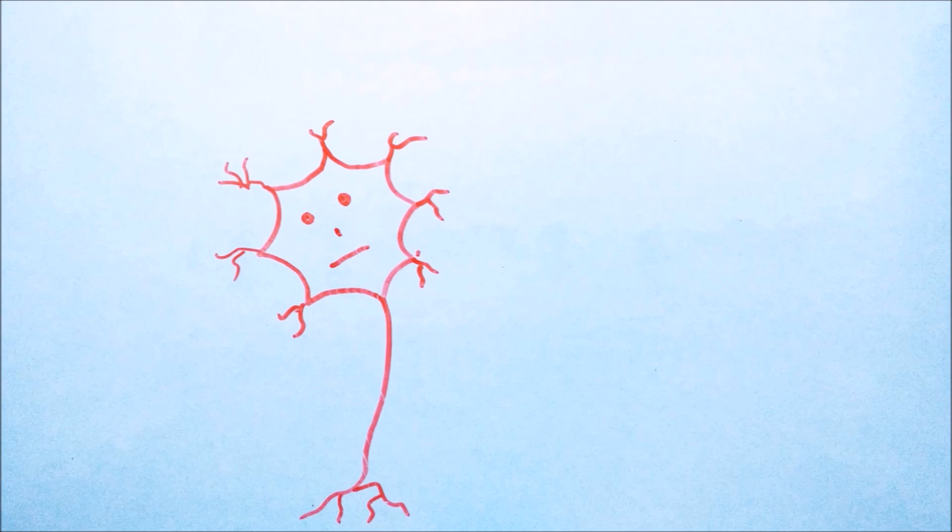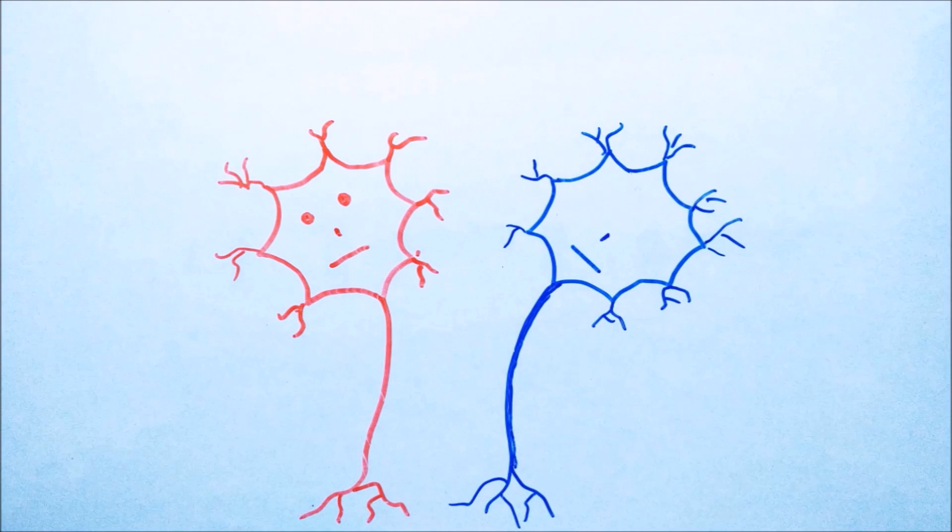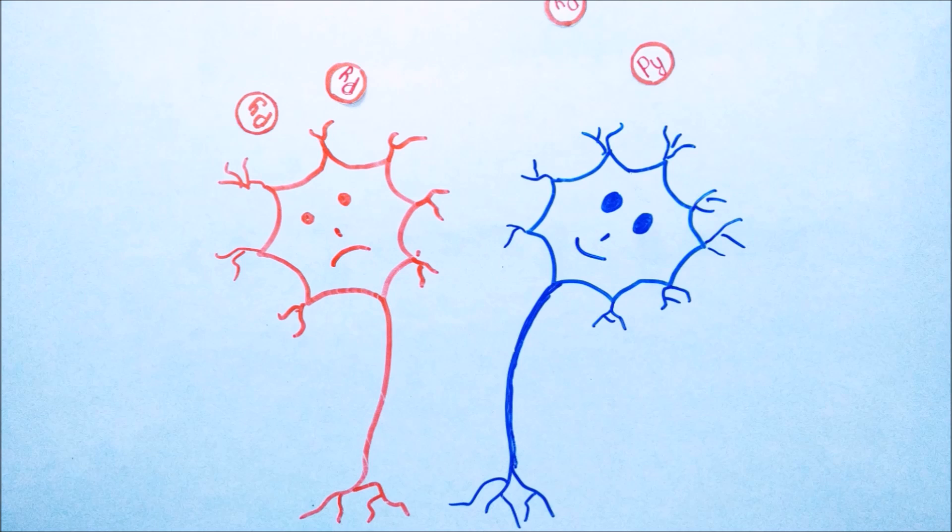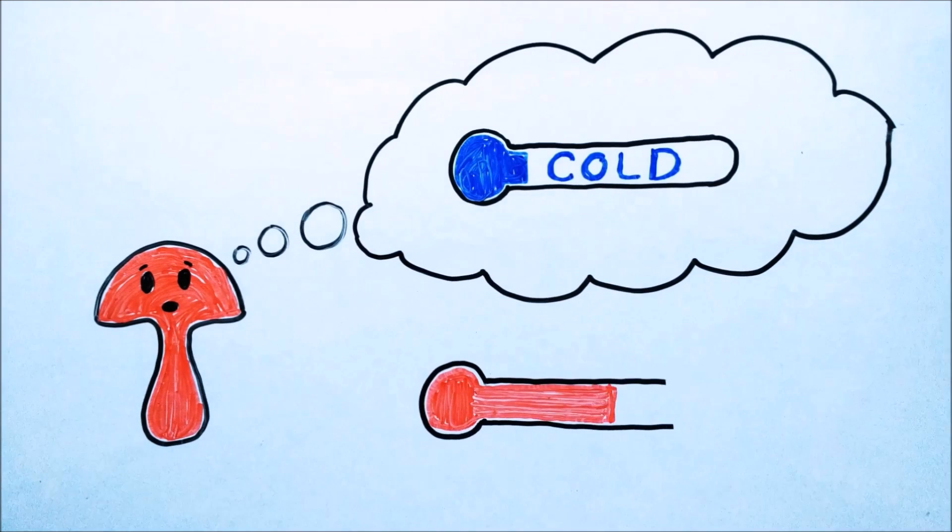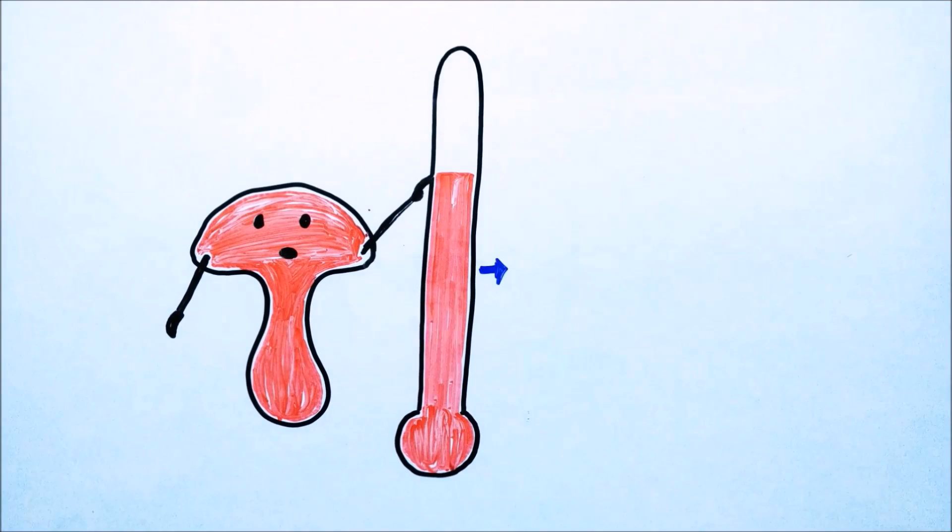Pyrogens inhibit heat sensing neurons and excite cold sensing ones. This makes the hypothalamus think the body is cooler than it actually is. In response to this situation, hypothalamus sets a temperature which is more higher than normal.